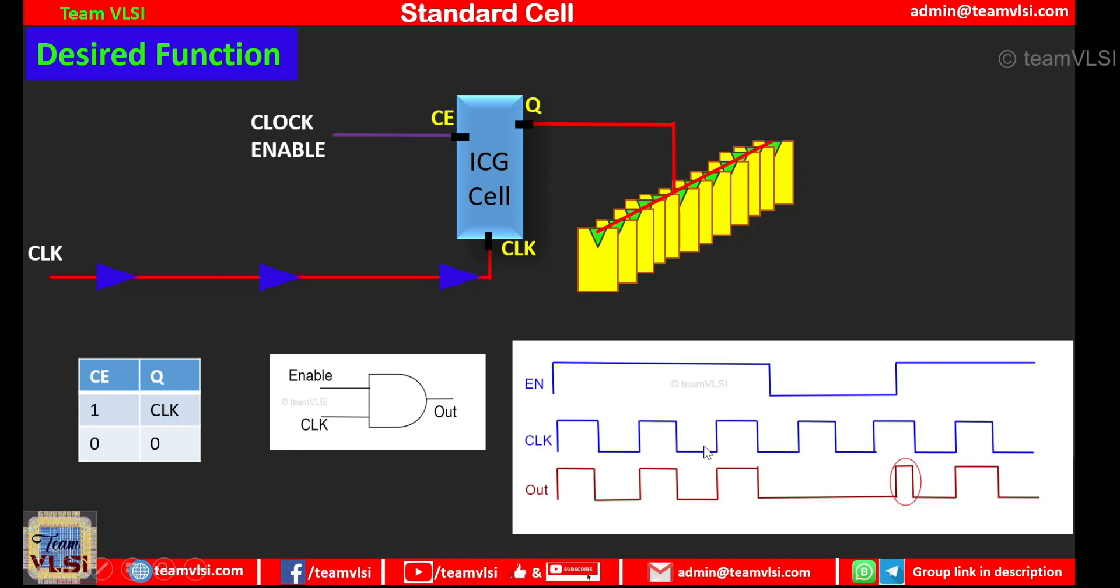And you know that the glitch in clock signal is not desired. We don't want to see this type of glitch. So we want a glitch free clock signal. So to avoid these glitches we cannot use the AND gate and we have a better solution for that.